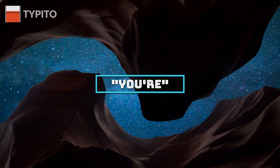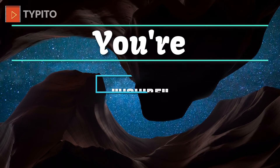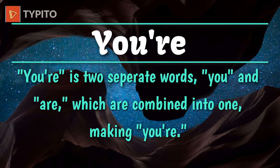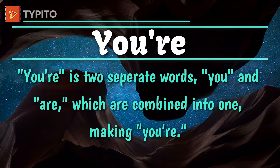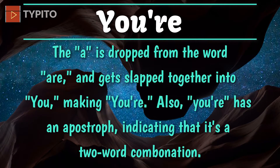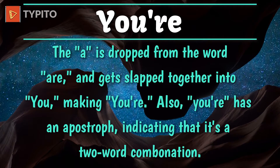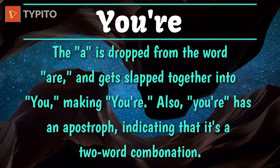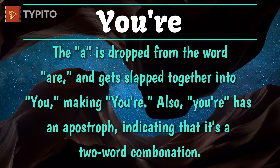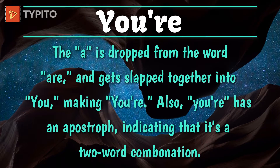Whereas 'you're' is two separate words — 'you' and 'are' — which are combined into one, making 'you're'. The 'a' is dropped from the word 'are' and gets slapped together into 'you', making 'you're'. Also, 'you're' has an apostrophe indicating that it's a two-word combination.